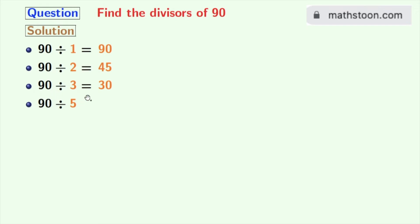90 divided by 5 is 18. So 5 and 18 are the divisors of 90. 90 divided by 6 is 15.